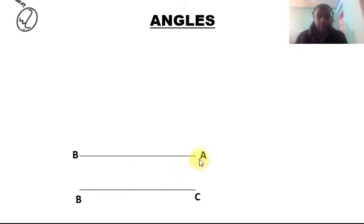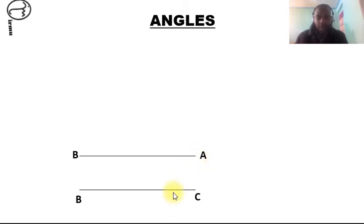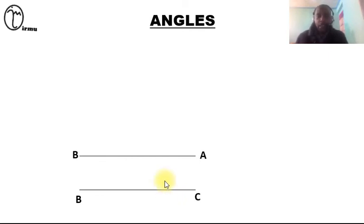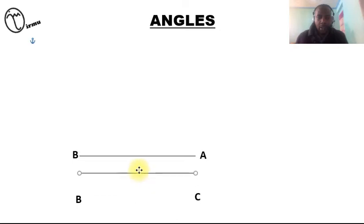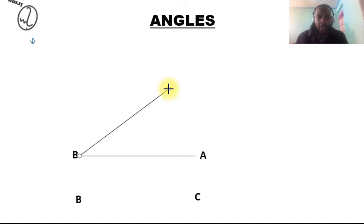I want to join the two lines to form an angle, so just watch what I'll do and you'll understand what an angle is. Line AB is the top line here, and I want to bring line BC and join the two together.